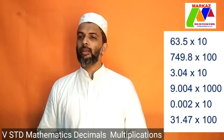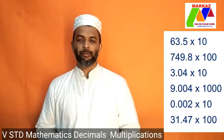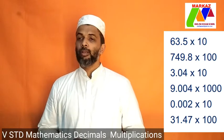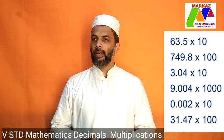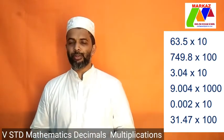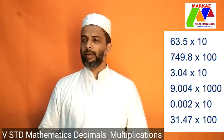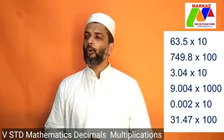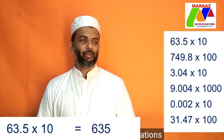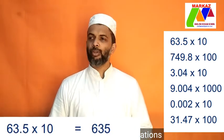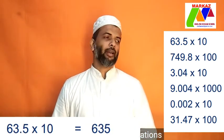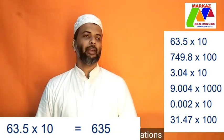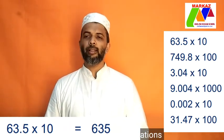In the first one, 63.5 into 10. There is only one decimal number after the decimal point. When multiply with 10, you have to move one number before the decimal point. So, answer is 635. 63.5 into 10, answer is 635.